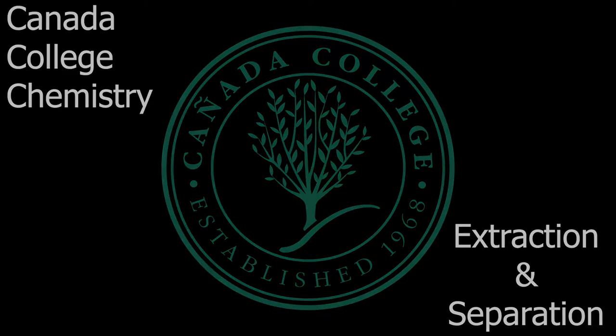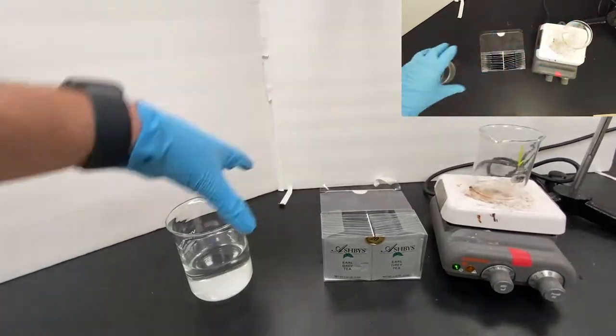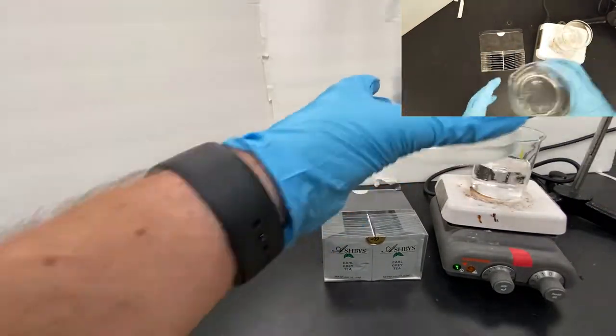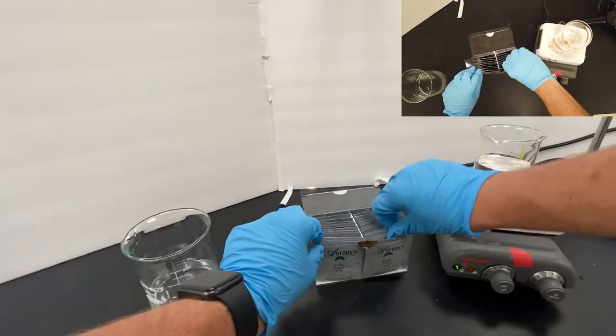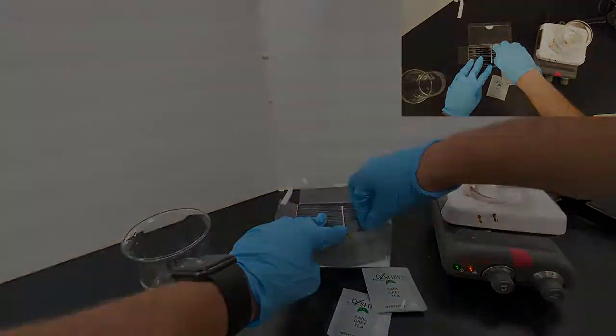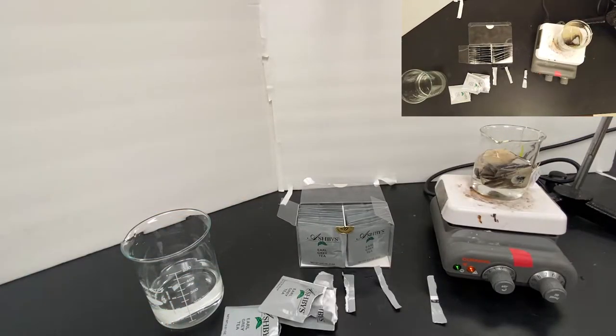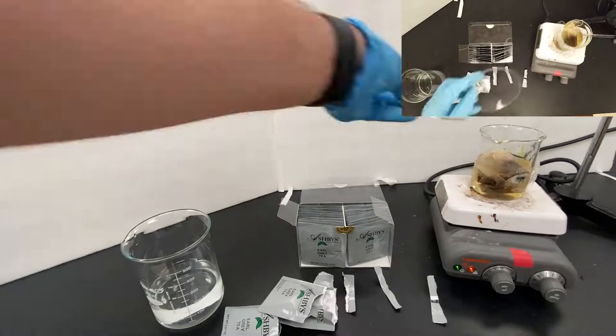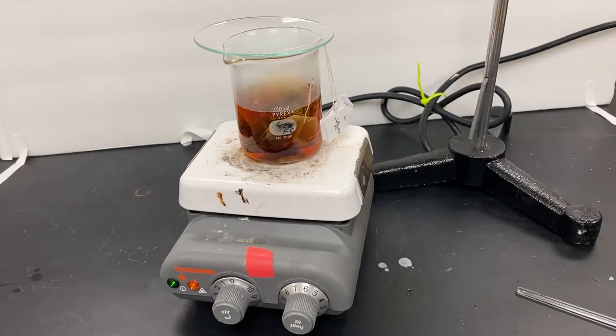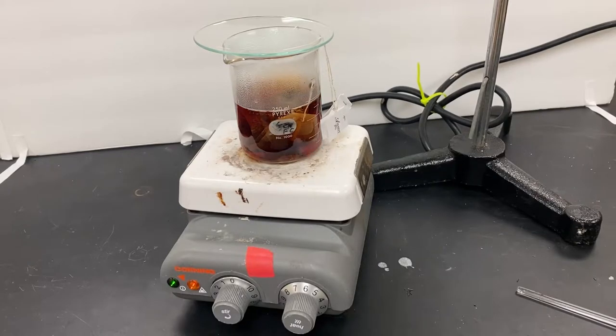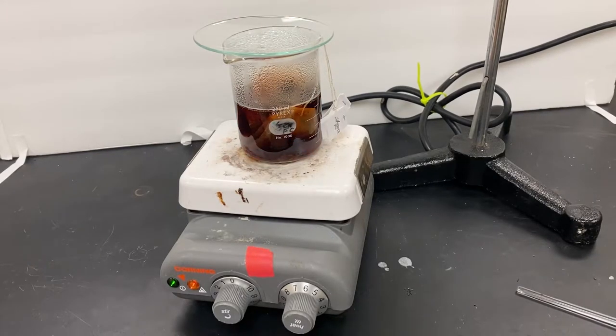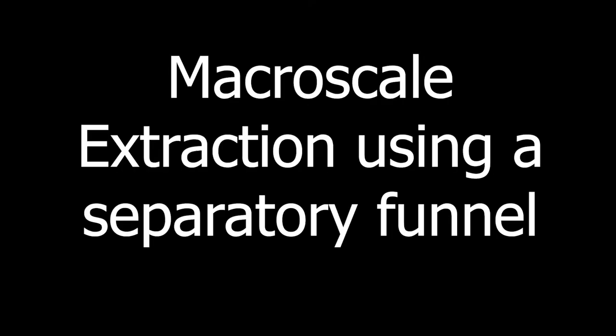Extraction and separation: how to extract caffeine from tea. First, place a 250 milliliter beaker on a hot plate and add about 150 milliliters of distilled water to the beaker. Open several tea bags and place them into the beaker. Place a watch glass over the beaker. This will help prevent the water from evaporating while it's heated to a boil. Remove from the hot plate once it has come to a boil and let cool.